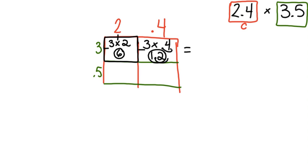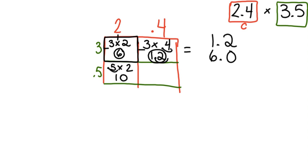So far the numbers that I have are 1 and 2 tenths and 6 wholes. I am going to add a zero to the end of 6 wholes to make sure that I have place value consistent throughout all of my numbers. Now I am going to move on to the second row: 5 tenths meets up with 2 wholes. I know 5 times 2 is 10, and I notice I only have one decimal in that problem — it is only one jump over — so my answer here will be 1 whole. I am going to add that to my addition list.